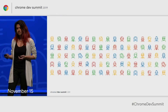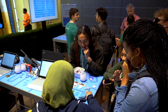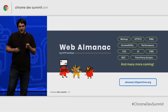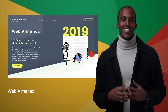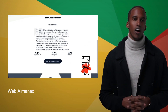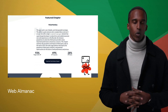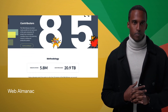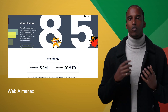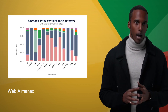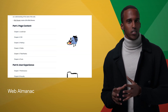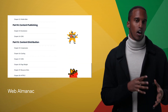Chrome Dev Summit is back again for another year in San Francisco, and there are a bunch of things we're excited to talk about. The first edition of the Web Almanac has just launched. The Almanac combines extensive HTTP archive data for millions of URLs with the expertise of many top contributors in the web ecosystem. It's an annual state-of-the-web report containing 20 chapters that covers every major aspect of the web, including page content, user experience, and content distribution.